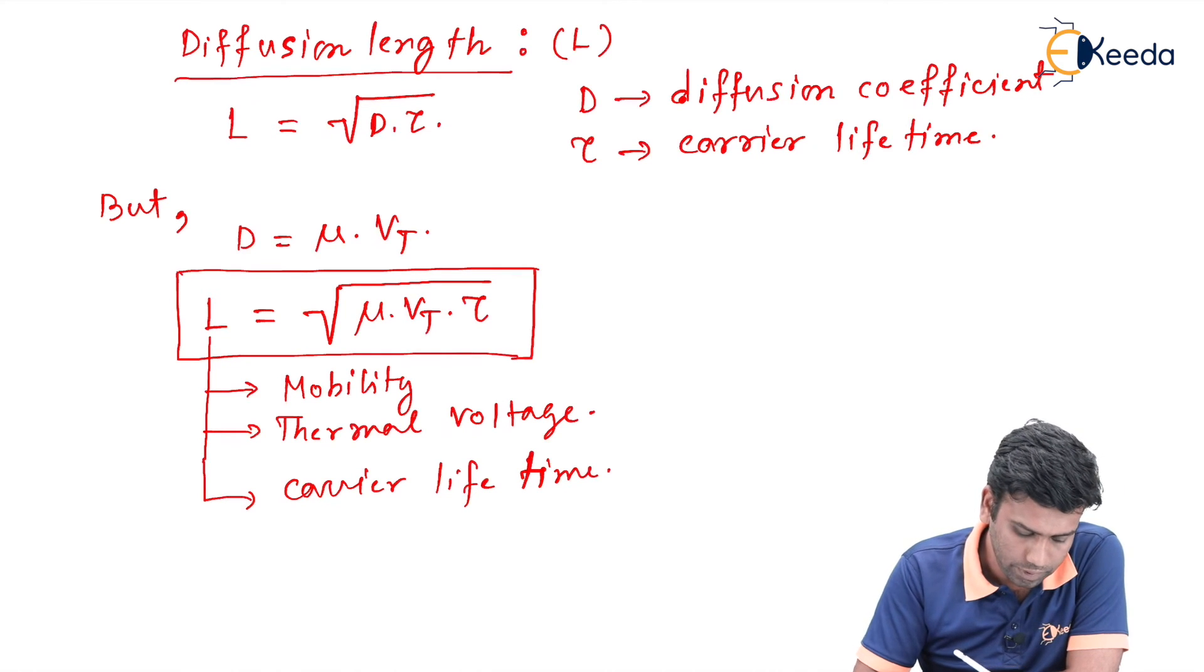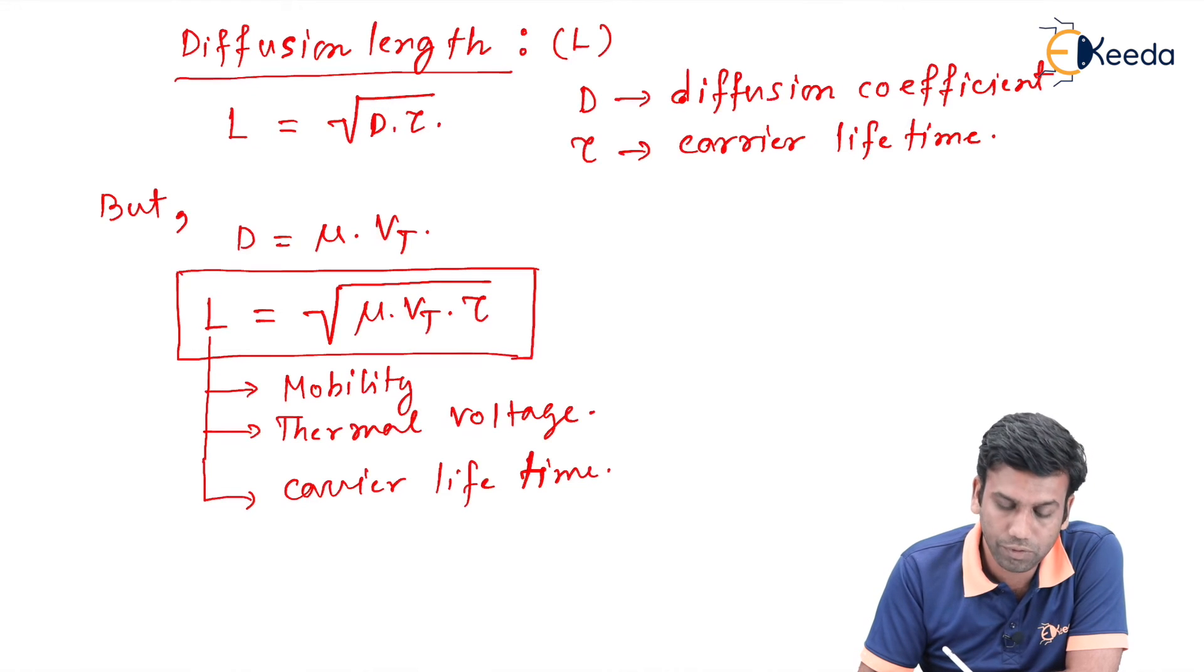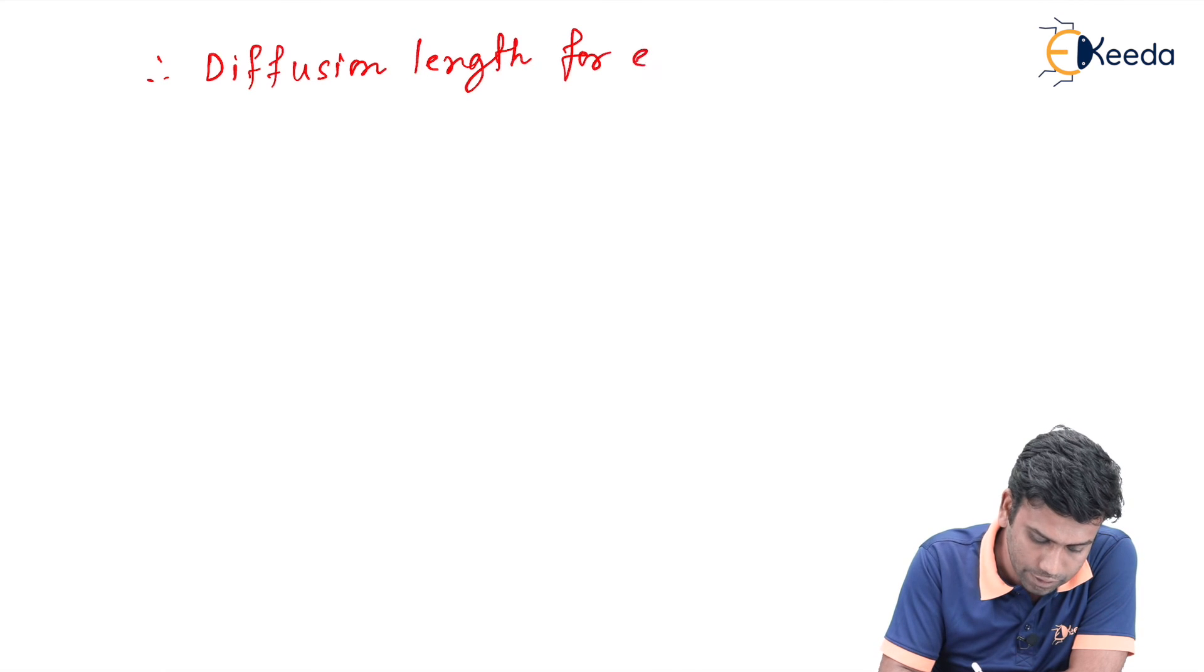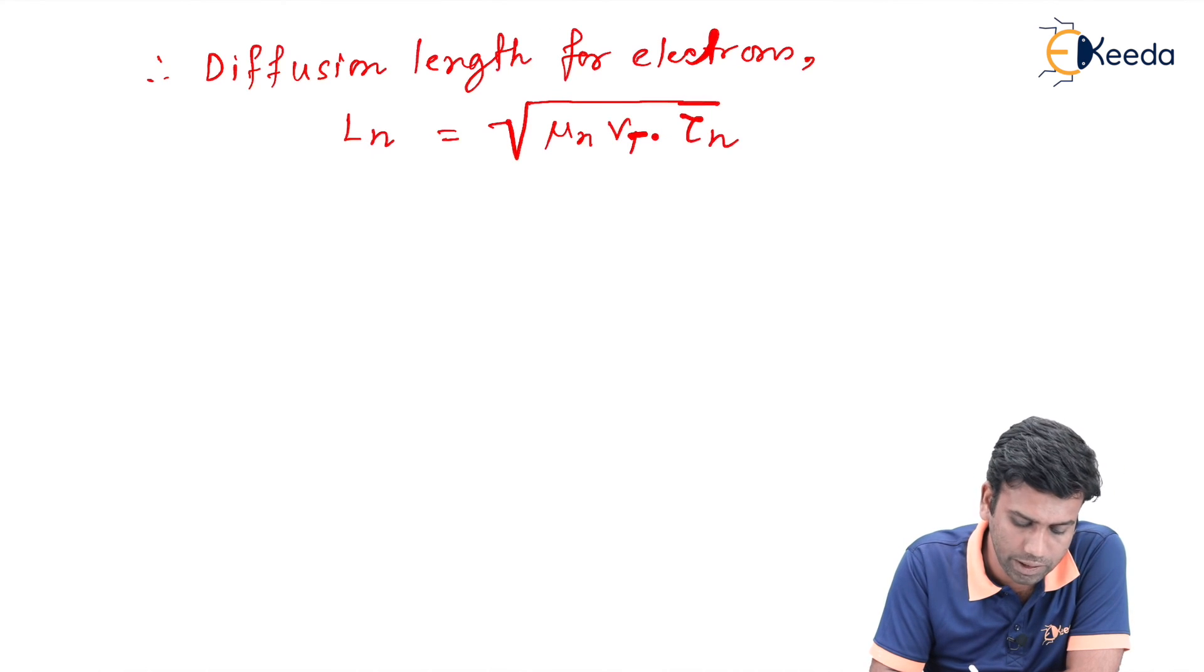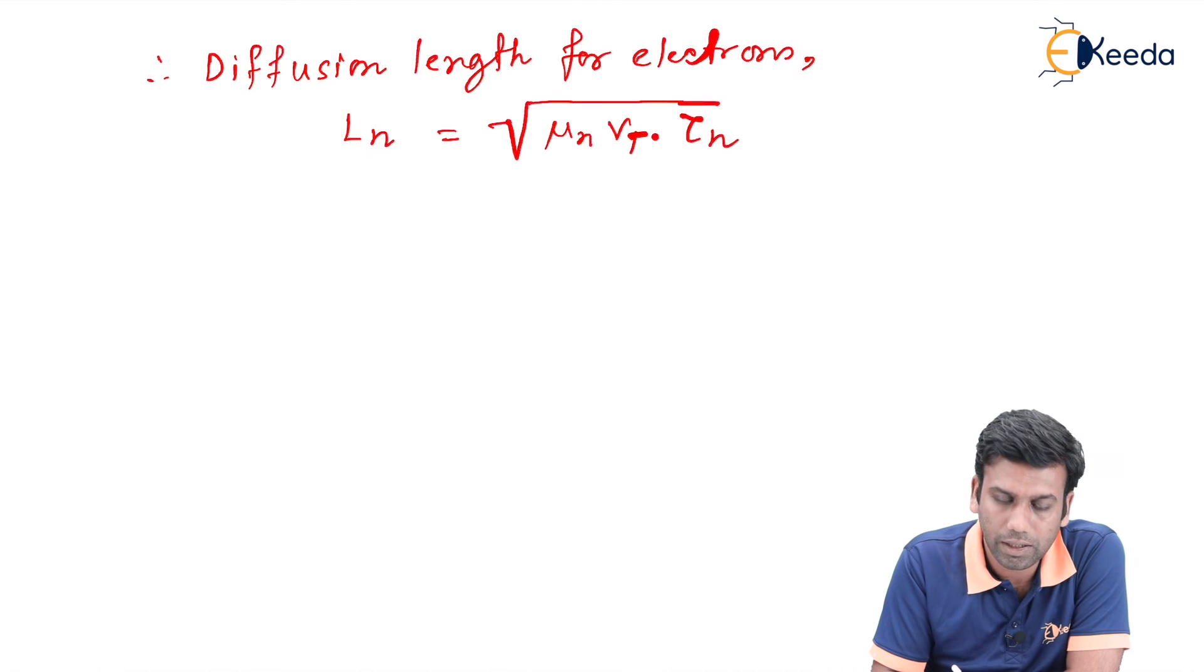Now if we want to find the length of diffusion for each carrier, that is electrons and holes, then the diffusion length for electrons is defined by Ln, and this Ln can be written as √(μn·Vt·τn), where μn is the mobility of the electrons, Vt is the thermal voltage, and τn is the carrier lifetime of the electrons.